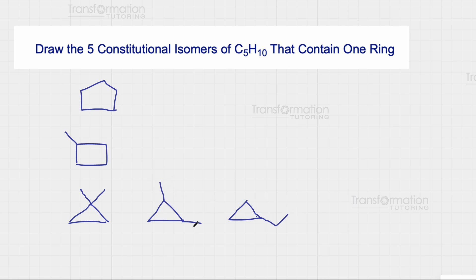These are all of my constitutional isomers for C5H10 that contain one ring. Let me know if you found this video helpful.